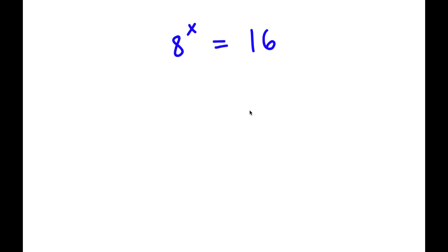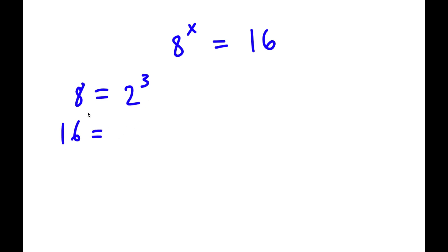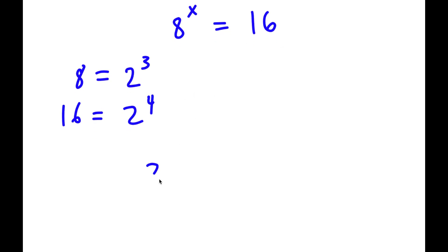In this problem, I have 8 to the power of x is equal to 16. To solve this, I'm going to start by rewriting both sides. 8 is the same as 2 to the power of 3, and 16 — since it's double 8 — is 2 to the power of 4. So I get 2 to the power of 3, to the power of x, is equal to 2 to the power of 4.